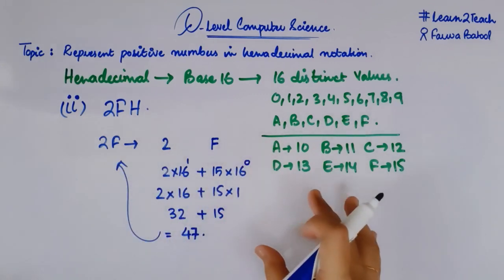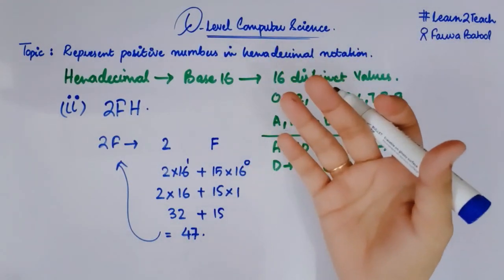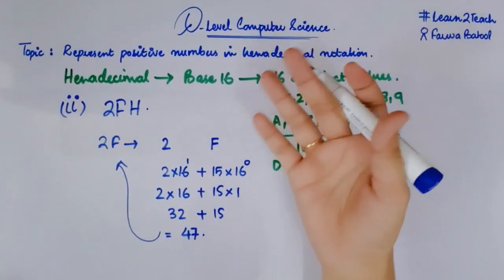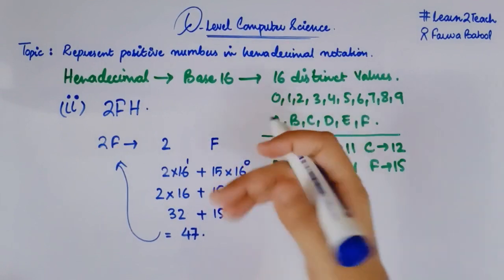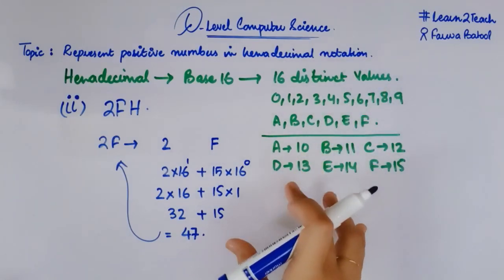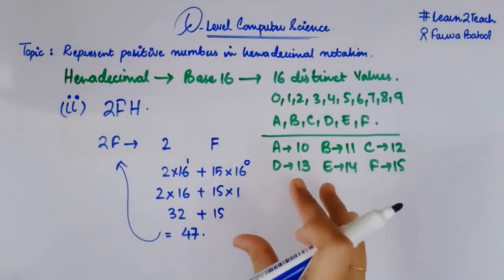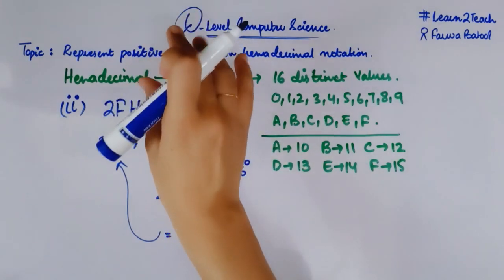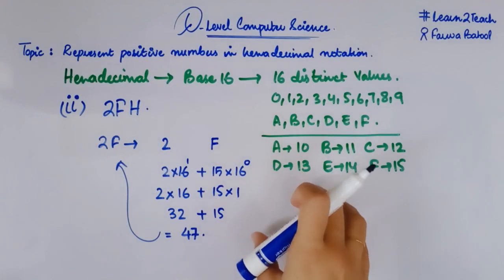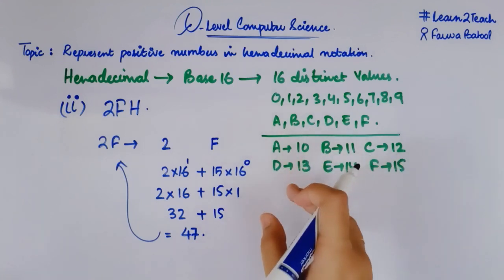I hope it is clear how you represent a positive number in a hexadecimal notation. The topic will be even clearer when I share the conversion videos showing how to convert hexadecimal to decimal and decimal to hexadecimal. In the next video I will explain the importance of hexadecimal numbers and why it is important to represent positive integers in terms of the hexadecimal number system. Thank you so much for watching — please like, subscribe, and share the channel and videos with all the students in your circle. See you in the next one, take care.